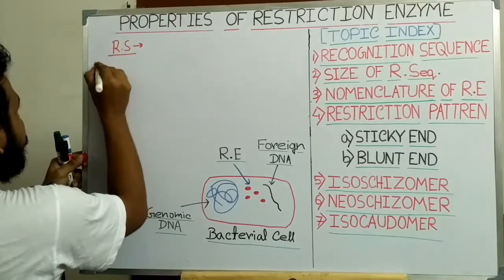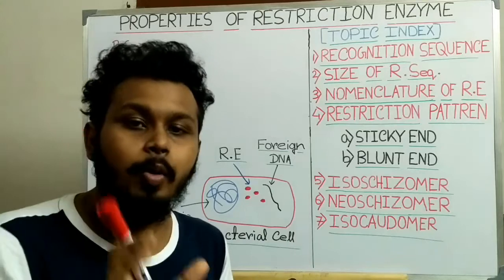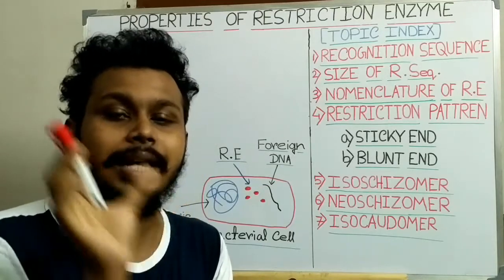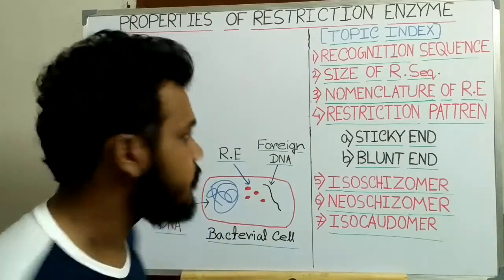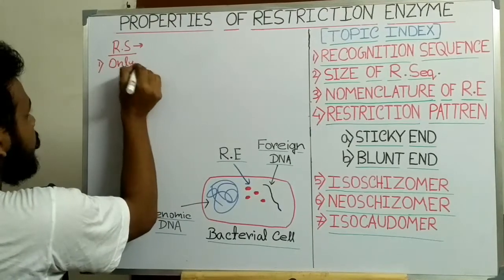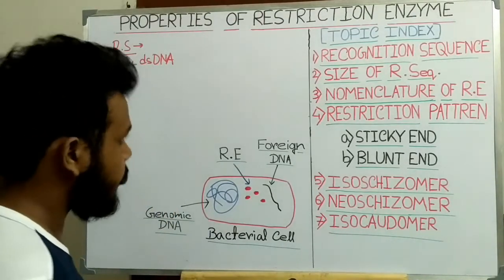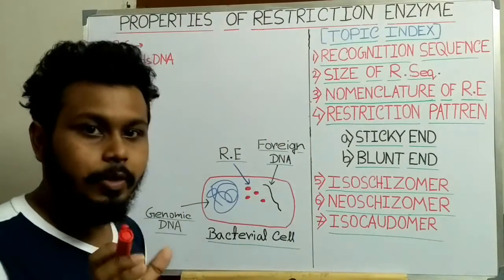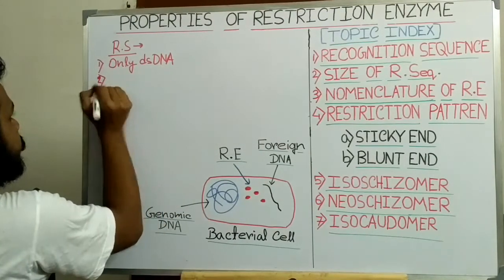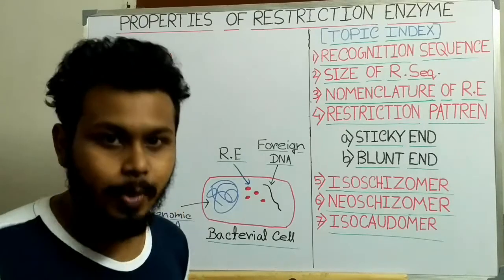Recognition sequence: the first property of this recognition sequence is that it is always double stranded DNA. That means the restriction enzymes only recognize the double stranded DNA as a recognition sequence. So the first point is they are always double stranded DNA, not single stranded.